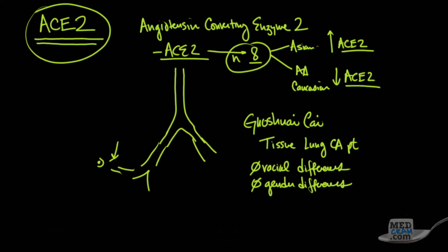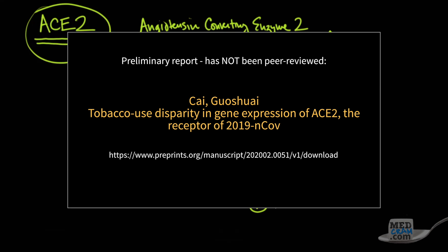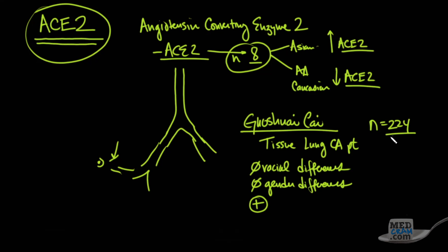But what they did see a difference in, statistically significant, in this other study that had an N of 224 patients, was that those who smoked had an increase in ACE2 distribution.